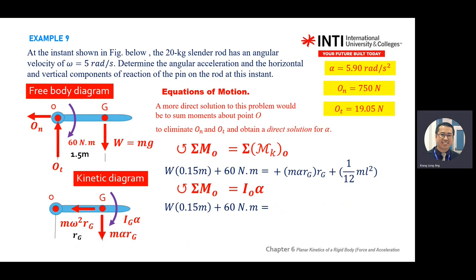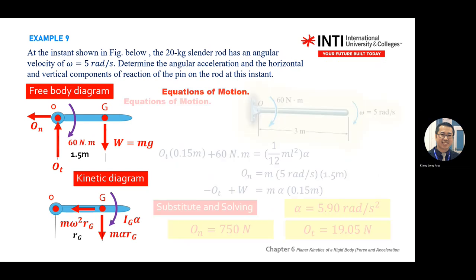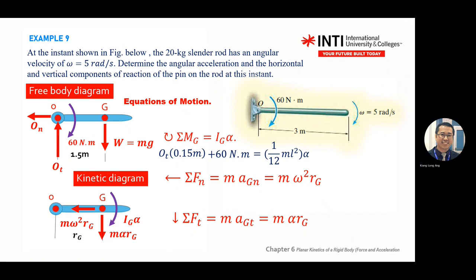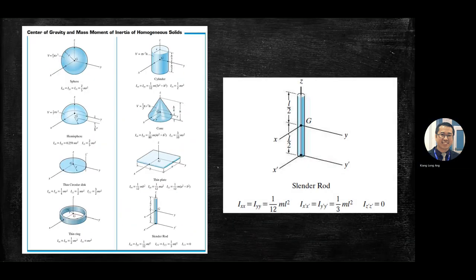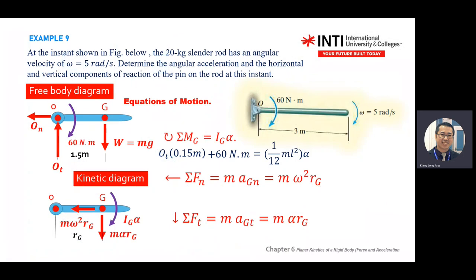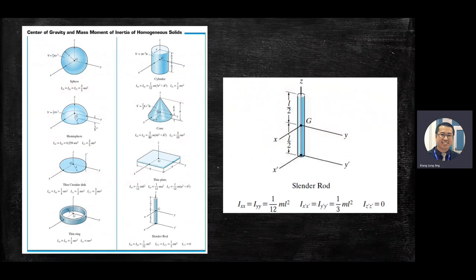When you look at this direction (Z), you use one-third M L squared. If you look at the G effect, you use one-twelfth M L squared. If you use the end point, you refer to x-prime and y-prime in the chart, not x and y. In this question, the O point is at the end of the rod, so refer to x'-y'.